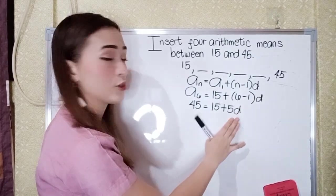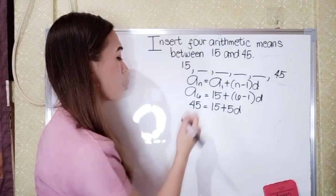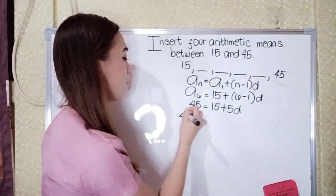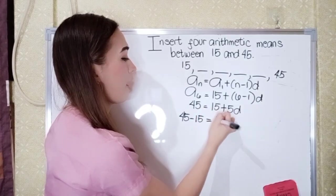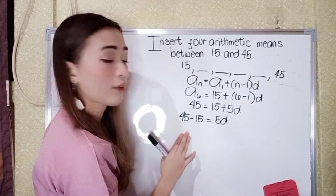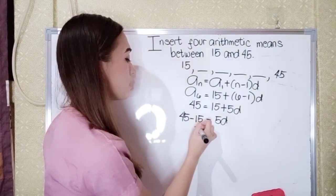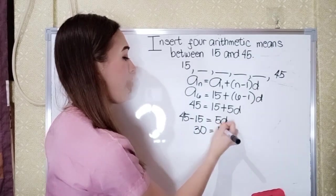So to get the distance or D, transpose 15 to the left. So it will become 45. So positive 15 will become negative 15 equals 5D. Next, we'll perform the operation. So 45 minus 15 is 30 equals 5D.